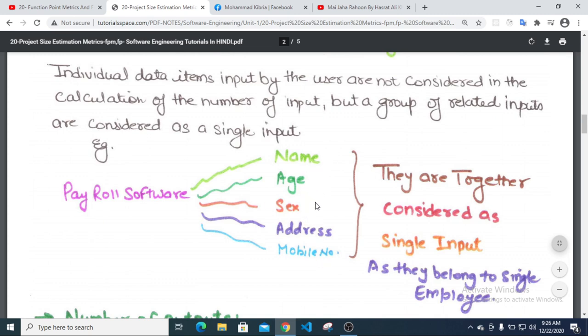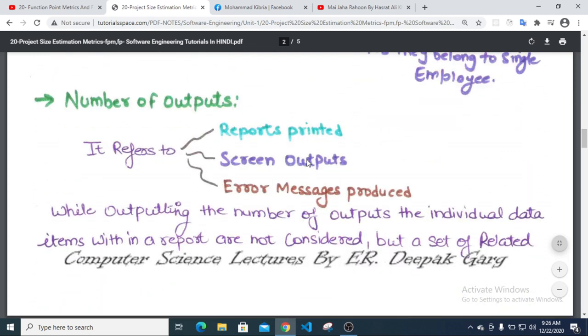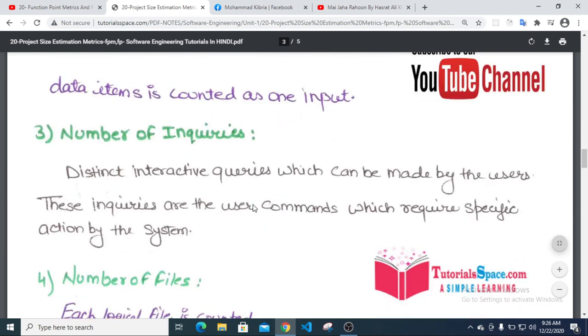Number of outputs: Reports printed, screen output, messages produced are all considered as outputs. Number of inquiries: These are distinct interactive queries which can be made by the user. These inquiries are user commands which require a specific action by the system.